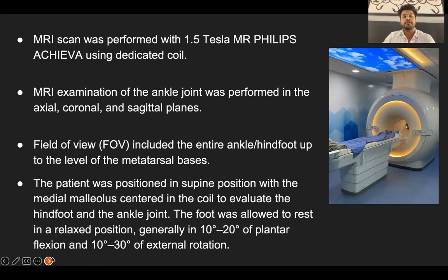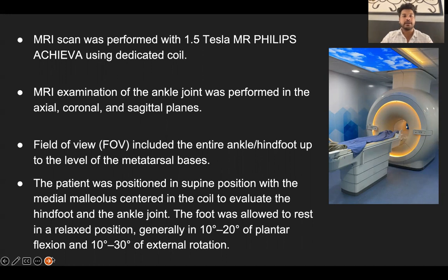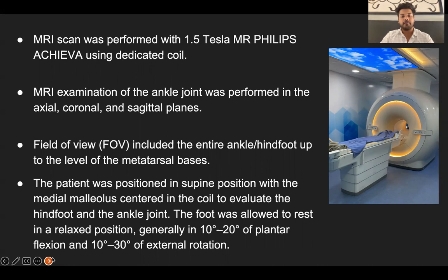MR scan was performed with a 1.5 Tesla Philips Achieva using a dedicated ankle coil. MRI examination of the ankle joint was performed in axial, coronal, and sagittal sections. The FOV included the entire ankle, from the hind foot up to the level of the metatarsal bases. The patient was positioned supine with the medial malleolus centered in the coil, with the foot in a relaxed position generally in 10 to 20 degrees of plantar flexion and 10 to 30 degrees of external rotation.